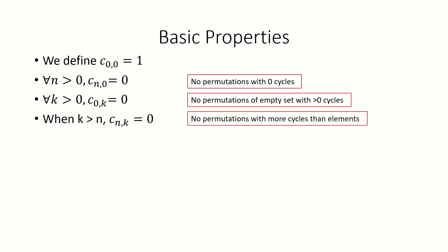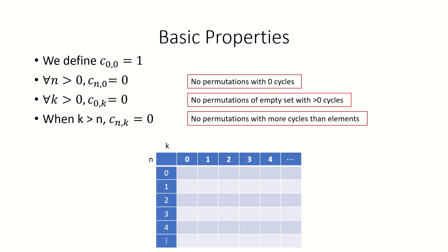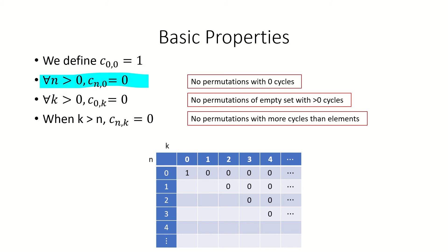Also, c sub 0 k equals 0 for all k greater than 0, as there's no way to permute an empty list with a non-zero number of cycles. Similarly, c sub n k equals 0 for all k greater than n, as it's impossible to use more disjoint cycles than we have elements. If we start writing a table of Stirling numbers, these properties already let us fill in many entries. With n along the rows and k along the columns, the first property gives entry 1, and the last property tells us all entries above the main diagonal are 0. The second property tells us that the rest of the entries in column 0 equal 0.